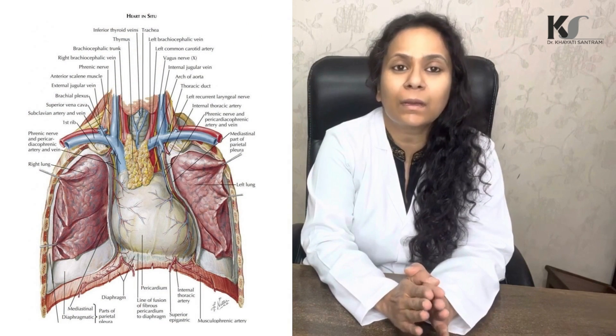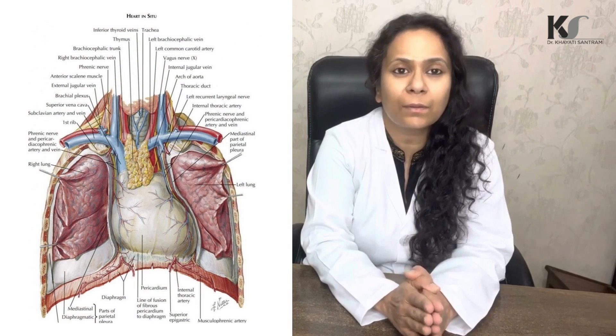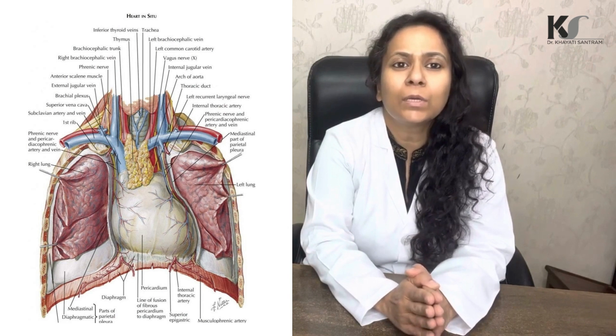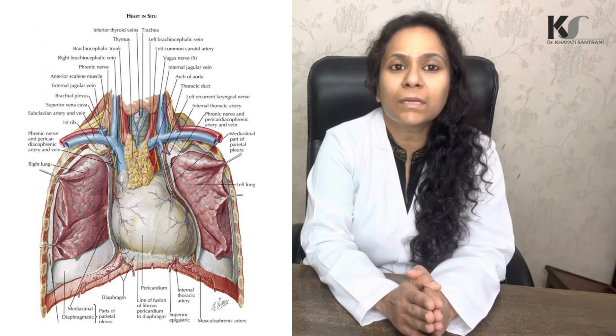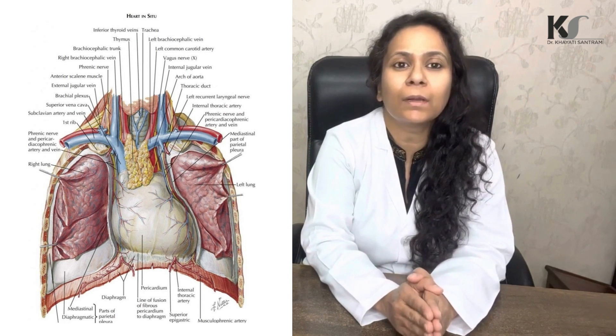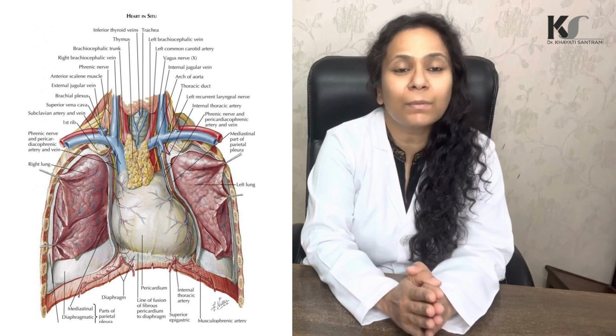Hello, we'll be talking about the heart today. The heart is an important circulatory organ. If you look at the situation of the heart, it is situated in the middle mediastinum — that is, between the lungs. The area between the lungs is known as the mediastinum, which is further divided into anterior, middle, and posterior. The heart is the organ present in the middle mediastinum.